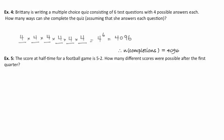In example five, this is a typical question as well. The score at halftime for a soccer game — we'll say it's European football — is five to two. How many different scores were possible after the first quarter? In this game, we have to think back: what could the score have been? Here's team one, let's talk about the options that team one has, and here's team two, let's talk about the options that they have.